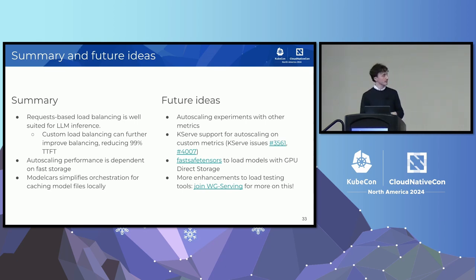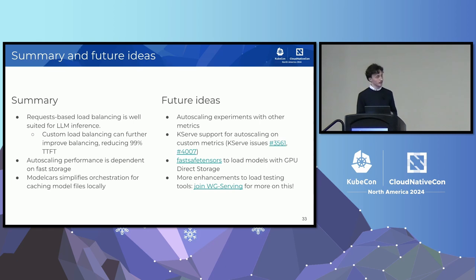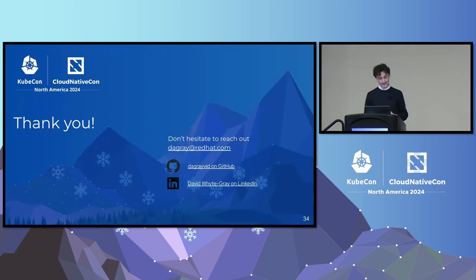To conclude: Knative request-based load balancing significantly outperforms random load balancing in TTFT and slightly in throughput and ITL. Custom load balancing on KV cache utilization and queue size improves further. For autoscaling, model loading time can be long if not carefully configured, and model cars in KServe is a nice way to cache model files locally via containers. Future work includes experimenting with autoscaling based on custom metrics like ITL or KV cache, feature requests for custom metric autoscaling in KServe on GitHub, the fast safe tensors project leveraging NVIDIA GPU Direct Storage for faster model weight loading, and the serving working group's community standard LLM load testing tool.